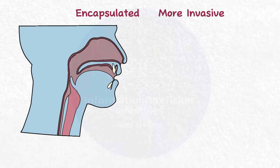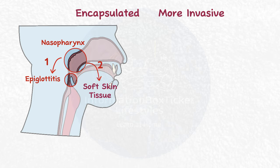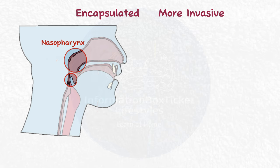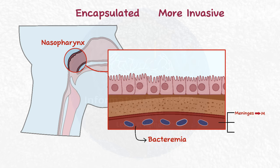Encapsulated strains tend to induce more invasive sickness due to their capsules. One method is to spread straight from the nasopharynx to the epiglottis, resulting in epiglottitis, or to the soft skin tissues of the face, causing cellulitis. Encapsulated strains can also pass past the nasopharyngeal epithelium and directly infect blood capillaries, resulting in bacteremia. It can spread from the circulation to distant areas such as the meninges (meningitis), bones (osteomyelitis), or joints (septic arthritis).